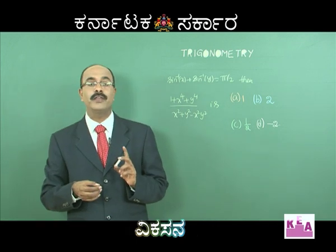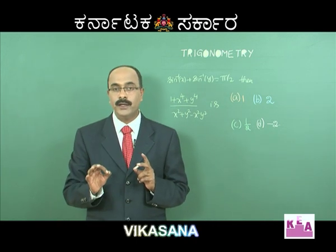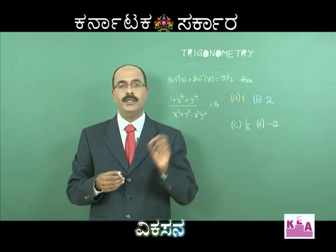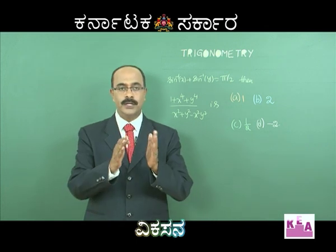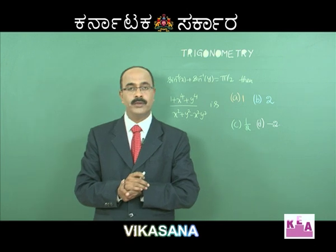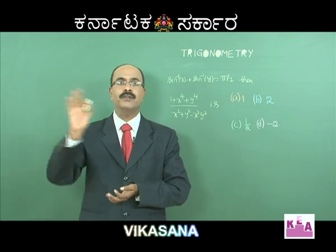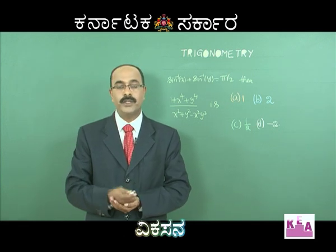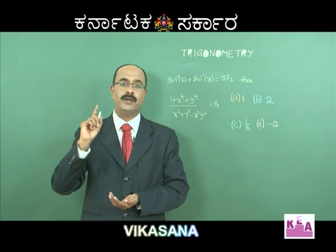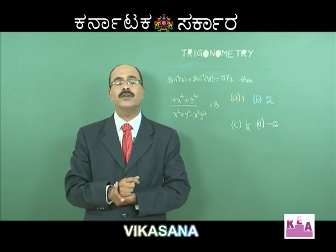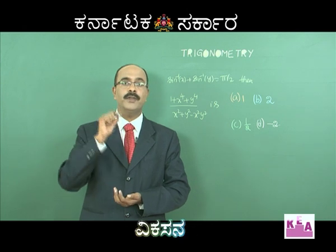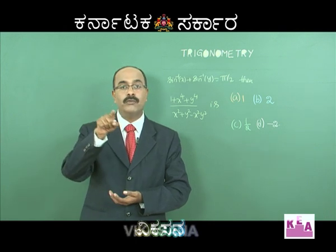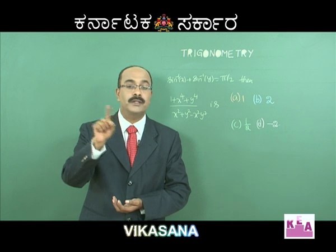If sin inverse of x plus sin inverse of y is equal to pi by 2, then x squared plus y squared is equal to 1. Here is how you can prove it: sin inverse of x plus cos inverse of x is equal to pi by 2, so cos inverse of x equals sin inverse of y. Therefore sin inverse of y equals cos inverse of root of 1 minus y squared, so root of 1 minus y squared equals x, and root of 1 minus x squared equals y.